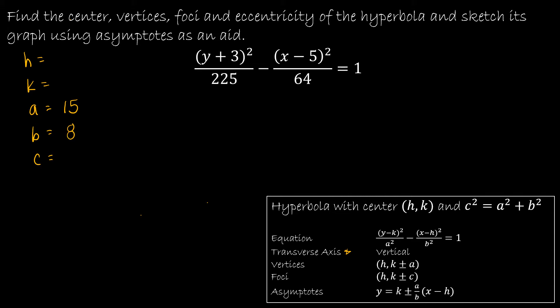And C squared is equal to 15 squared or 225 plus 8 squared or 64, which is going to give me 289, which means the square root of 289 is 17. So I have A, B, and C, and I haven't had to do that much work yet.